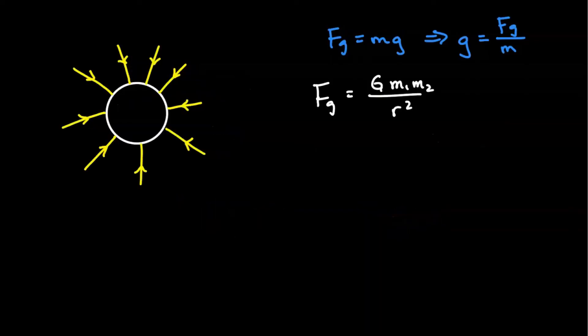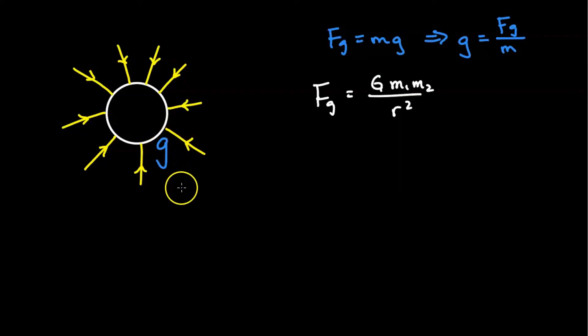To visualize gravitational fields, we use gravitational field lines — lines pointing in the direction of the gravitational field. Where lines are closer together, the gravitational field is stronger; where they are spread apart, the field is weaker.